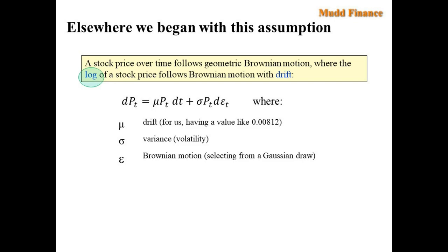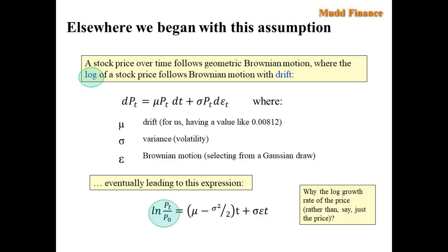You might remember in Economics 136 we began with the assumption, at least under certain circumstances, that the log of the stock price follows Brownian motion with drift, and we got this differential equation shown here at the bottom to represent that. That eventually led to the expression on the very bottom of this slide: the log of the ratio of the two prices is equal to the sum of the drift plus the noise effectively. That raises the question though, in this model, about why we use the log growth rate of the price rather than just the price.